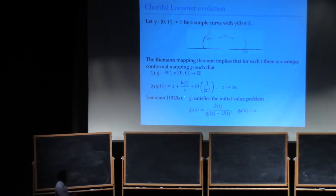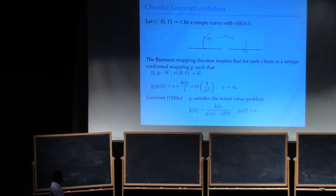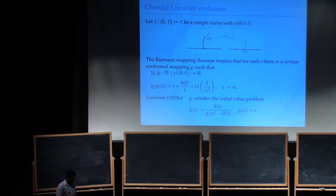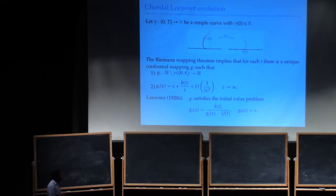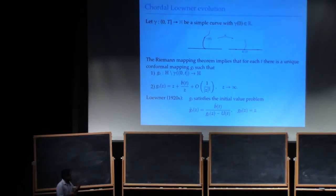The real point is that there is a constructive way of building these mappings: if you know the boundary value U(T), then solving this initial value problem gives you the conformal mapping. The Löwner equation — the first proof of the Riemann mapping theorem was developed by Koebe in 1905. Löwner found a continuous-time description of Koebe's theorem, and what Löwner was really interested in was resolving questions from univalent function theory. In particular, he's the one who made the Bieberbach conjecture famous.